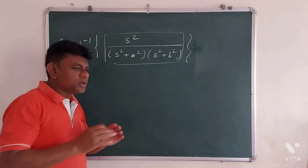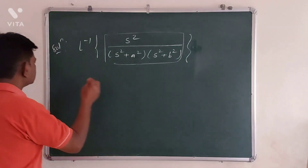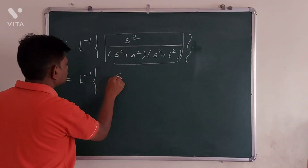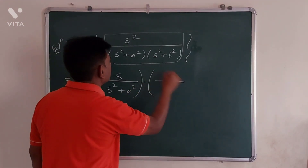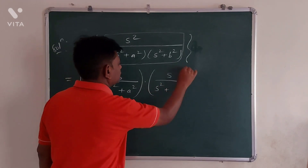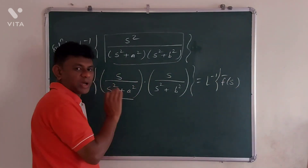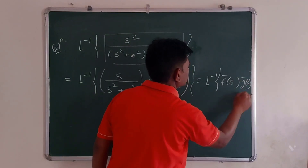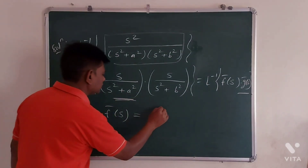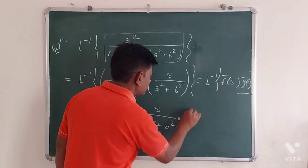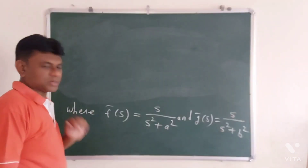Now for the solution, we write this given function in terms of a product of two functions in the form f̄(s) times ḡ(s). This equals L inverse of [s over (s squared plus a squared)] times [s over (s squared plus b squared)], where f̄(s) equals s over (s squared plus a squared) and ḡ(s) equals s over (s squared plus b squared).